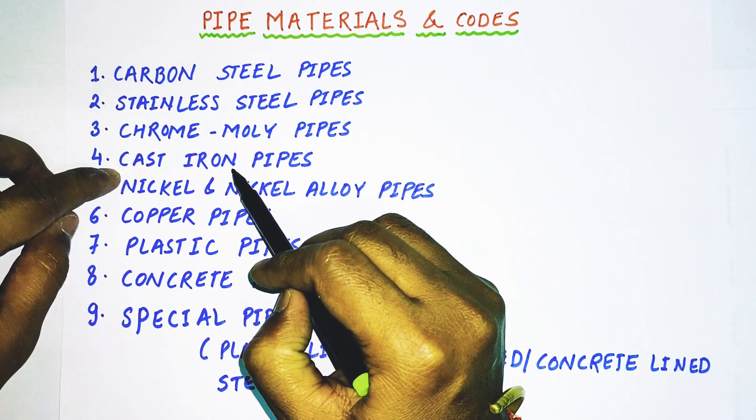Now we will learn about carbon steel pipe specifications and grades. In carbon steel we have a very important specification: ASTM A 106. In ASTM A 106 we have three different grades: Grade A, Grade B, and Grade C. This whole ASTM A 106 is called a specification and A, B, C are the grades. Grade C has higher tensile strength at 485 megapascals, Grade A has 330 megapascals, and Grade B has 415 megapascals. In industry, Grade B is very widely used.